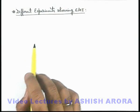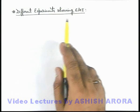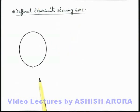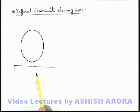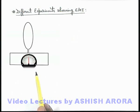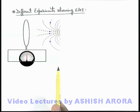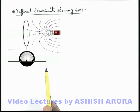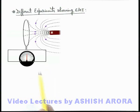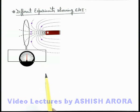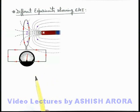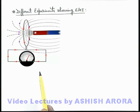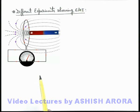Let us discuss different experiments which show electromagnetic induction. Here you can see a circular coil connected with a galvanometer. If a magnet is brought close to the coil, we can see that the magnetic lines from the magnet passing through the coil are increasing. So when the magnet comes closer to the coil, a current is induced, which we can see in the deflection of the galvanometer.